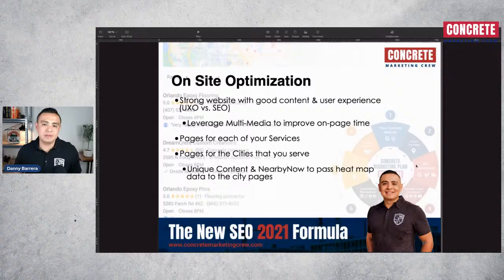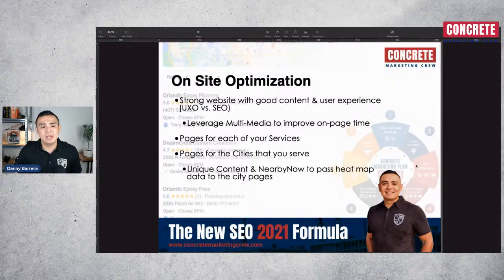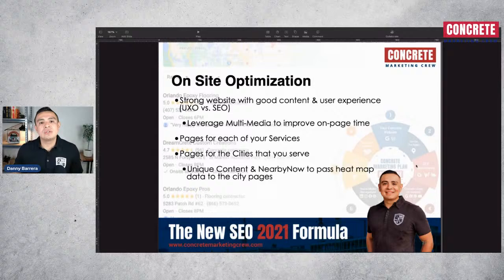The second thing is page structure: you must have a page for each one of your services. Whatever services you have, you must have one dedicated page. You can have 20 or 30 services — for example, with concrete coatings, depending on how many products and applications you're trained to use, you can build one page for each one of those.